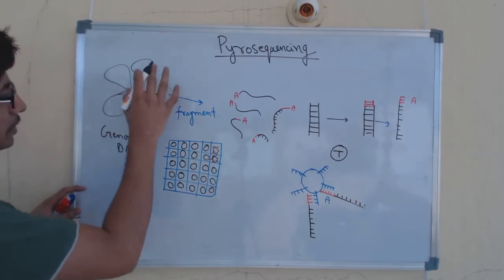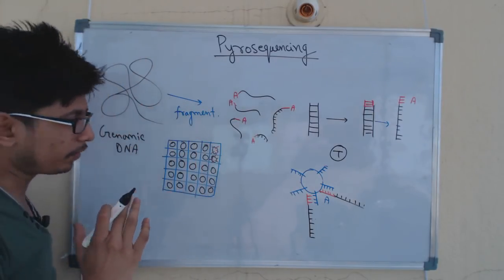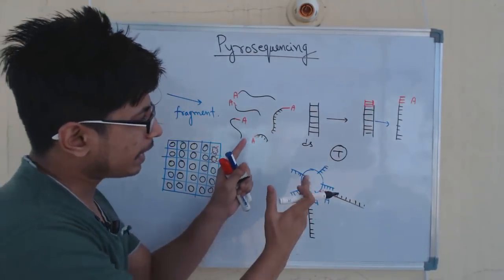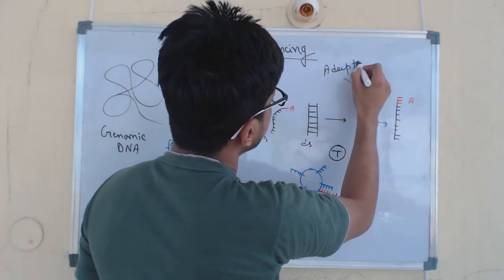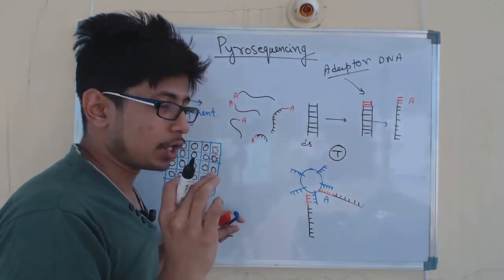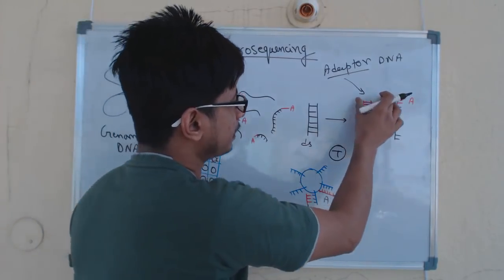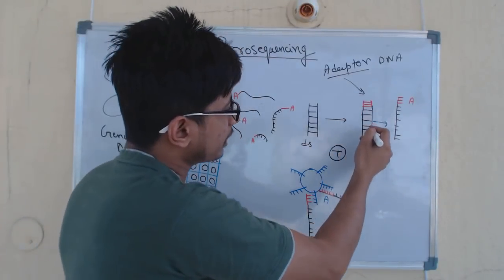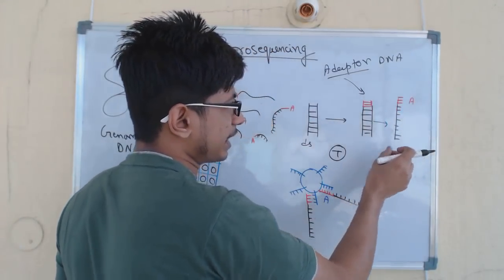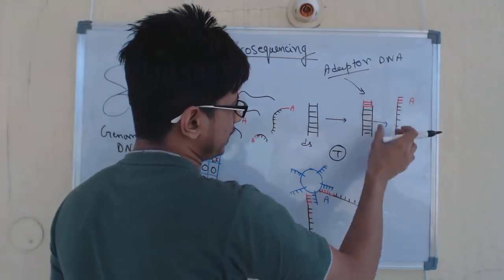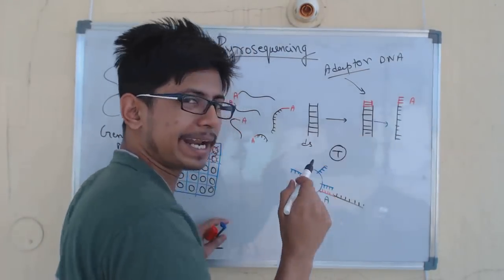Starting with the genomic DNA — the complete, large DNA sequence — we need to fragmentize it because it's big, so we break it down into small double-stranded DNA fragments. Once we have these double-stranded DNA fragments, we add what is known as adapter DNA sequences to the ends of all the breakdown portions of the genomic DNA. After adding the adapters, we separate the double-stranded DNA into single strands. Now we have single-stranded DNA with an adapter attached to one end. This is the preparation of the DNA.